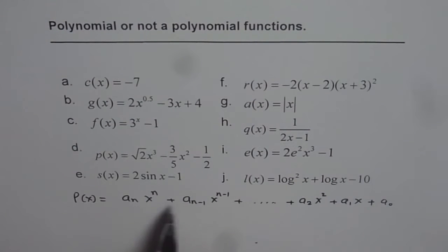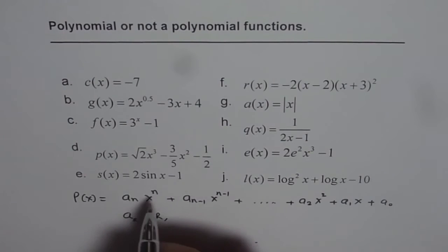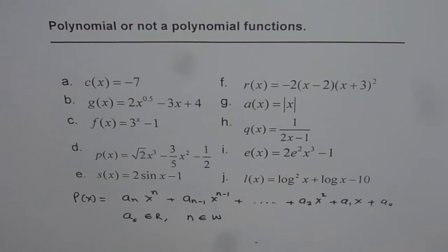Where the coefficients, these a's, belong to the set of real numbers. So the coefficients, the a's or aₙ's, they belong to the set of real numbers and n belongs to the set of whole numbers. That means n can be 0, 1, 2, 3, 4 and so on.